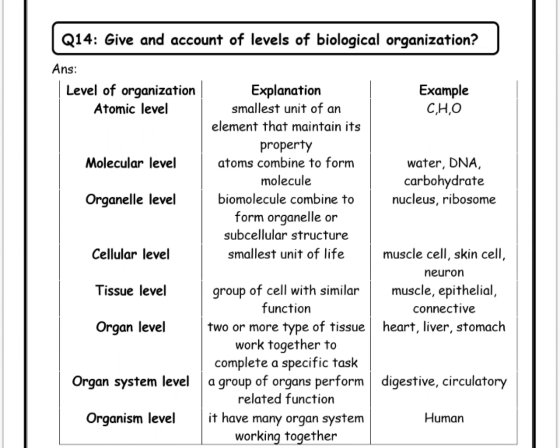There are eight levels of biological organization: atomic level, molecular level, organelle level, cellular level, tissue level, organ level, organ system level, and organism level. The first one is atomic level.